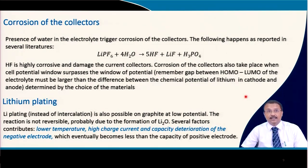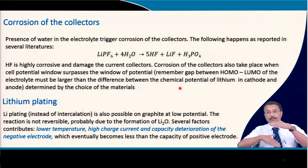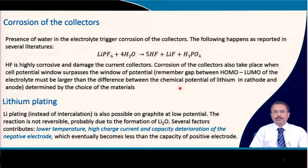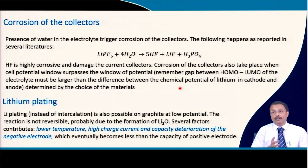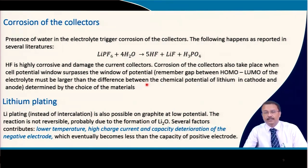Corrosion of the current collector is another point. Trace levels of H₂O react with LiPF₆, a fluoride-based salt, and HF is generated. HF is extremely corrosive and can damage the current collectors. Corrosion of the collectors also takes place when the cell potential window surpasses the window of electrolyte potential — the HOMO and LUMO gap. The negative electrode will get reduced, the electrolyte will decompose and precipitate on the surface to form the SEI layer. All these factors are important to consider when designing a cell from a materials perspective.